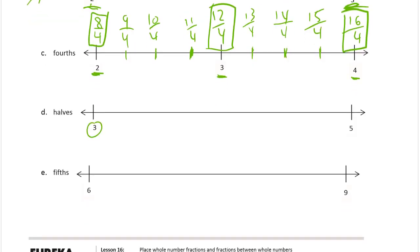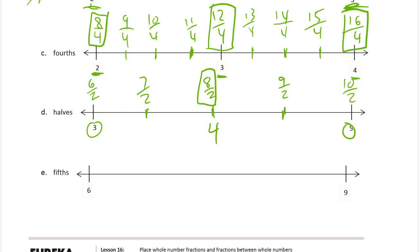Now we're looking at halves between 3 and 5. Well, halfway between 3 and 5, there's a number missing there — it's 4. So there's a whole number in between 3 and 5, don't forget it. Now we're going to mark halves in between these. So 3 halves — it takes 2 halves to make a whole. Now if you've got 3 wholes, that's 6 halves. And then 7 halves, 8 halves — box that one — 9 halves, and 10 halves. Because every 2 halves there's a whole, so 2 times 5 is 10 halves.